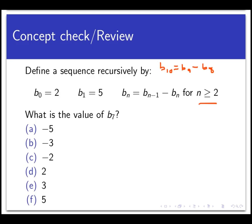So with that in mind, what's the value of b_7? See if you can compute that, pause the video, and come back when you are done. So the answer here is going to be F, or 5. And let's quickly run through that and see what we have.